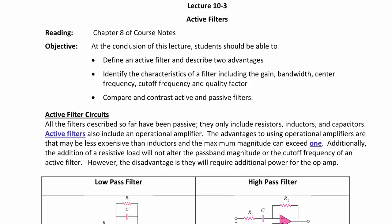At the conclusion of this lecture, students should be able to define an active filter and describe two advantages of active filters; identify the characteristics of an active filter, including the gain, bandwidth, center frequency, cutoff frequency, and quality factor; and compare and contrast active and passive filters.